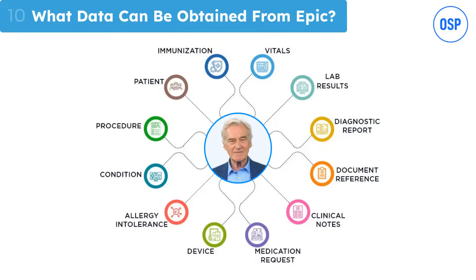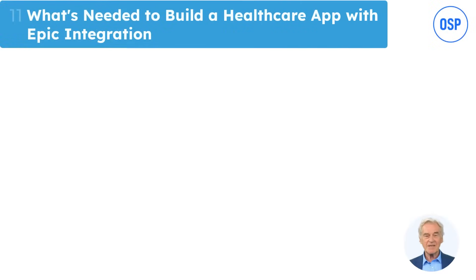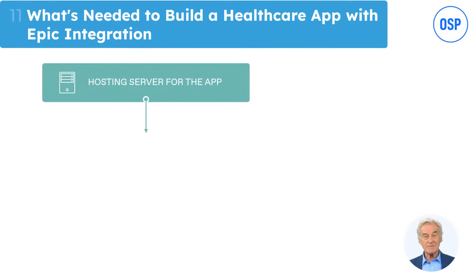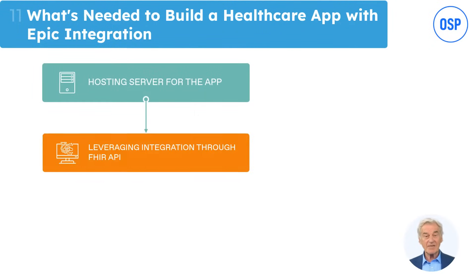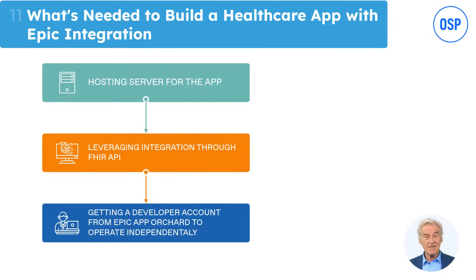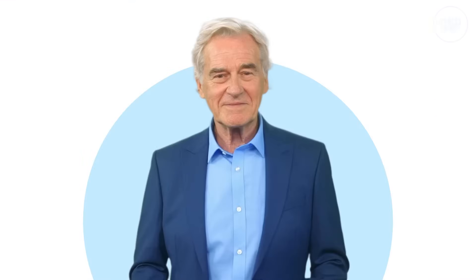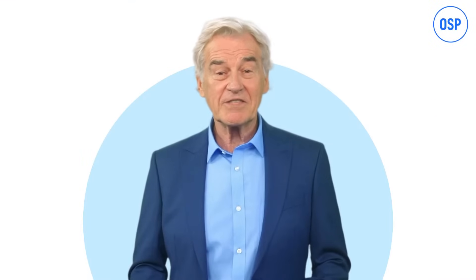Now let's see the second aspect: what's needed to build a healthcare app with Epic integration. Typically three components are needed. Number one: a server needs to be set up to host the health app. Number two: connecting the health app with Epic through FHIR API for secured access and pulling of data from Epic. Number three: registering the app with Epic by getting a developer account from Epic's App Orchard. And that brings us to the end of today's discussion.